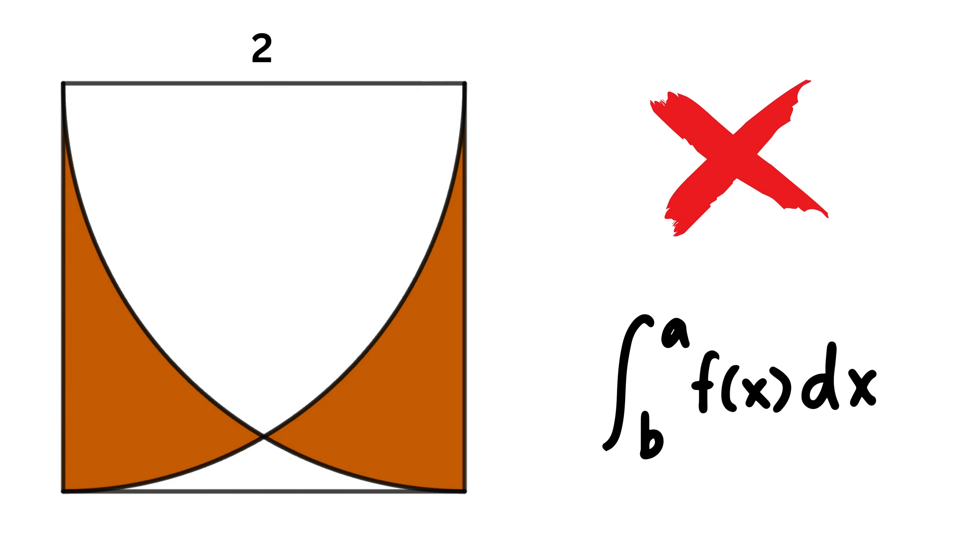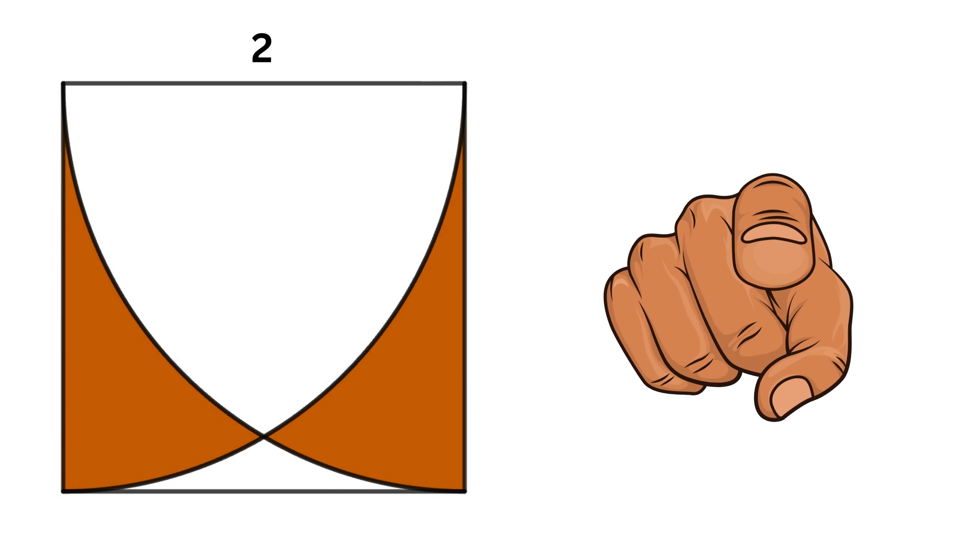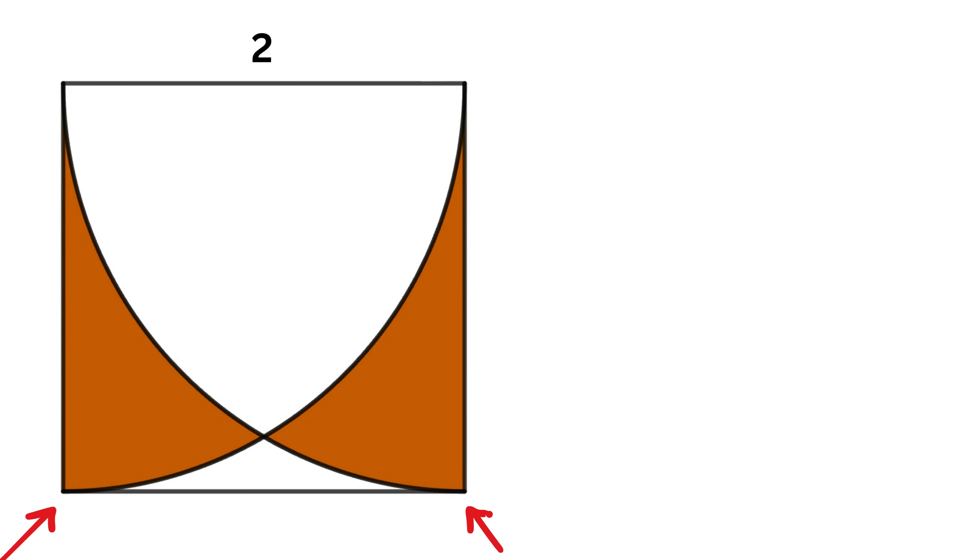Note that you cannot use calculus in order to solve this problem. So can you solve it? As a first step, since the quarter circles are drawn from the two bottom corners of the square, the side length of the square is the same as the radius of each quarter circle, so the radius R is equal to 2.